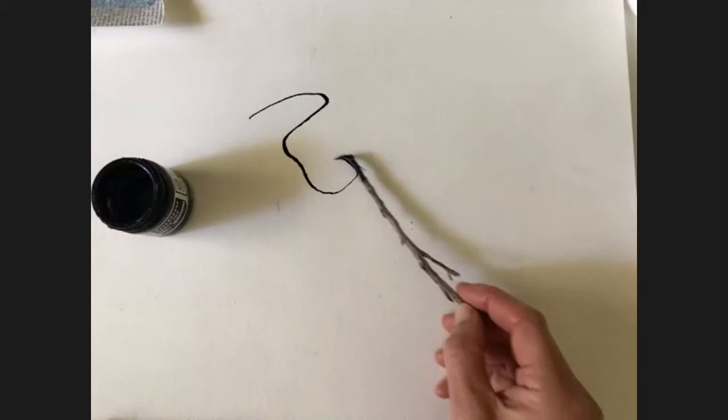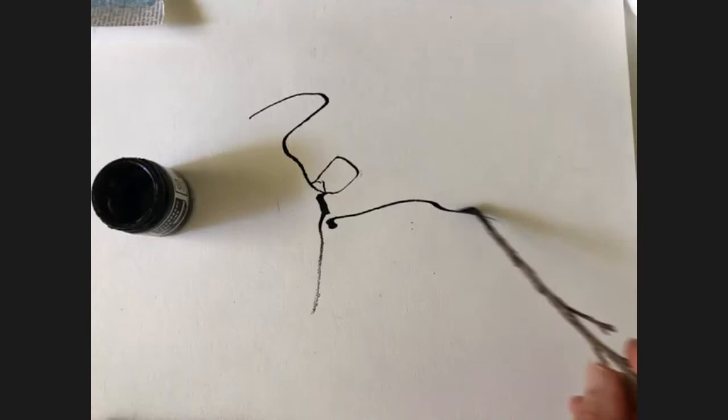What we're going to do is create a series of different marks on this paper. So I'm going to start by dipping my stick into the ink and just move it around to see what kind of mark it can make.